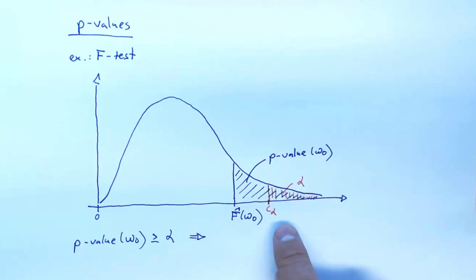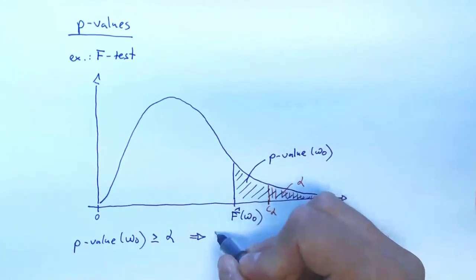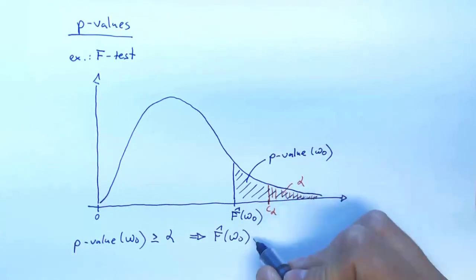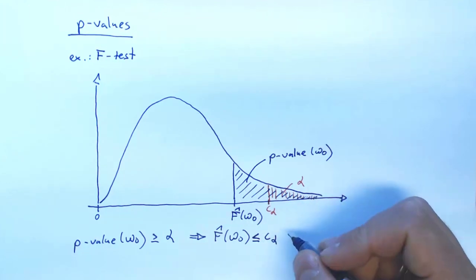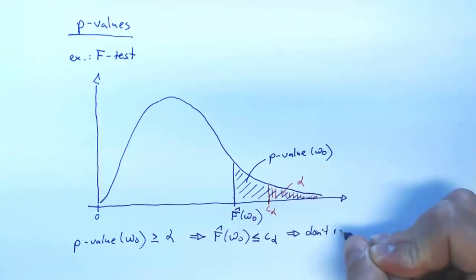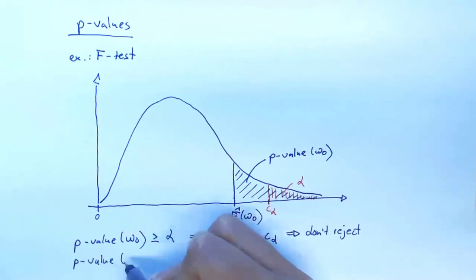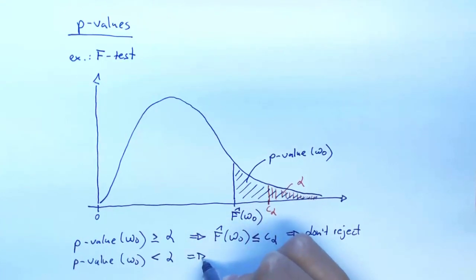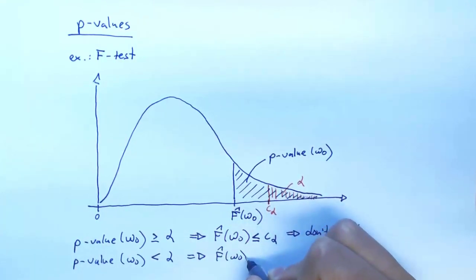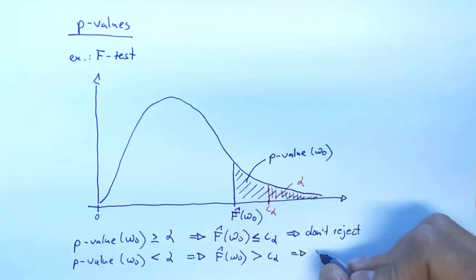If the critical value exceeds the test statistic, then we know we should not reject — the p-value is more than alpha. The only way the p-value can be less than alpha is if the test statistic exceeds the critical value, and then we know we should reject.